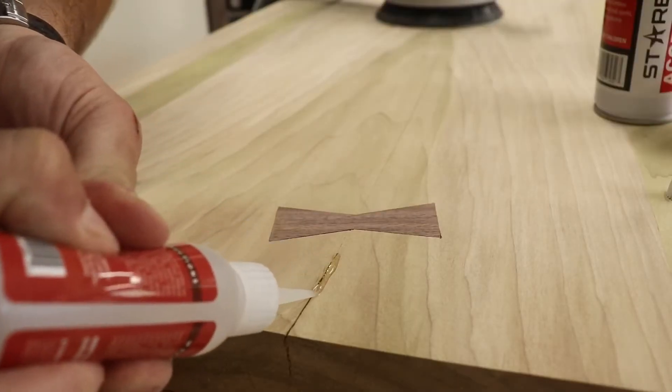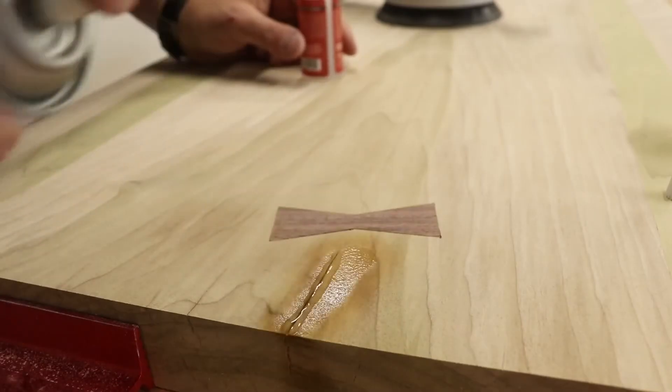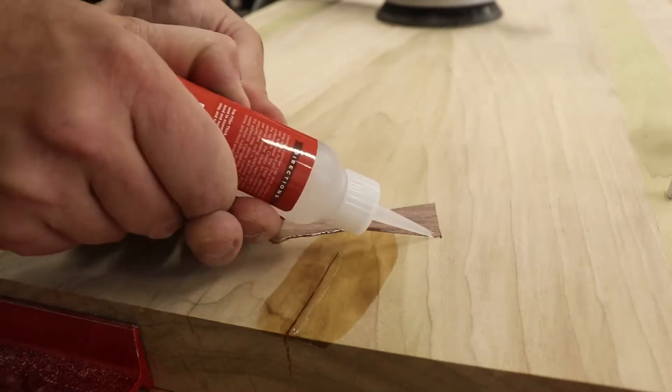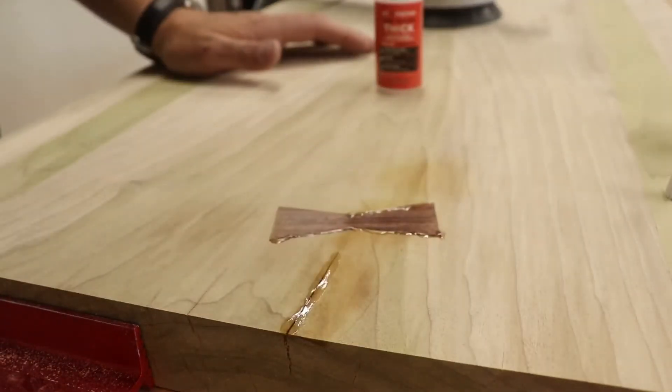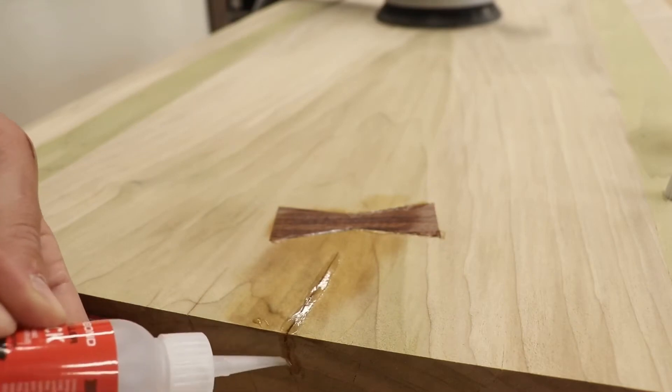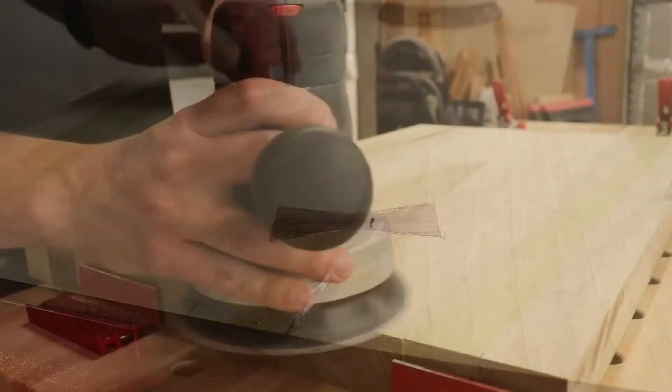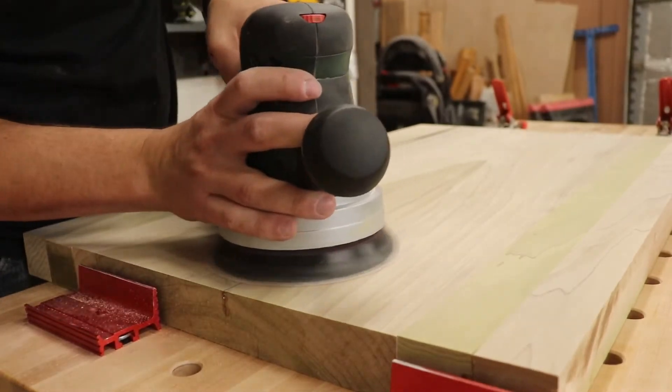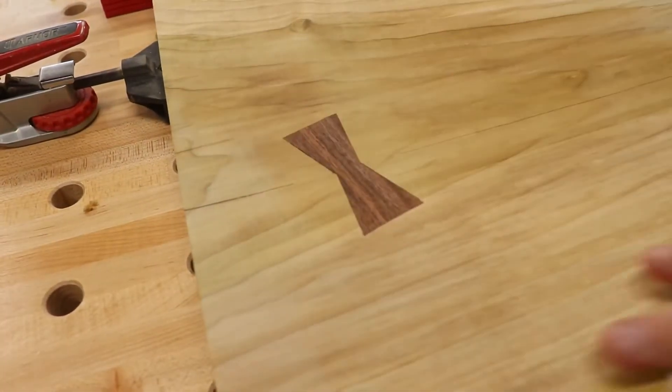Now I use Starbond adhesive to fill the gaps and the little cracks in the micro gaps along the bow tie. I use the accelerator, which hardens the glue within like 60 seconds. I sand it down and it's good to go. So it's by far the quickest thing I've found to fill voids like this.